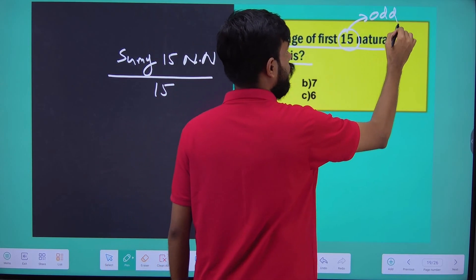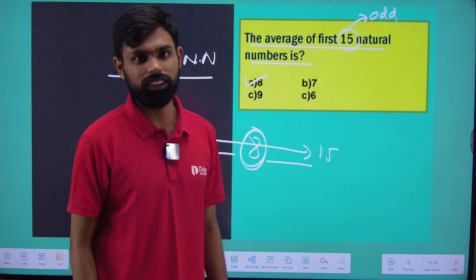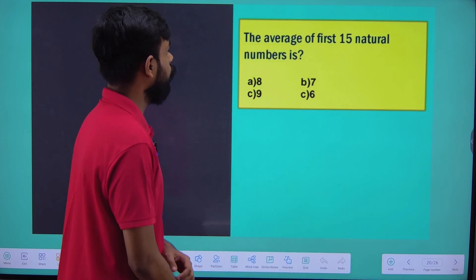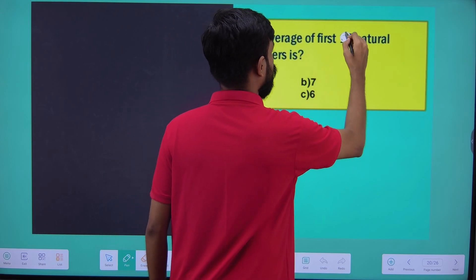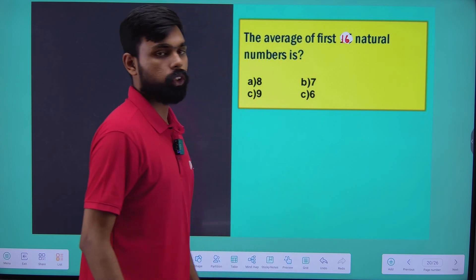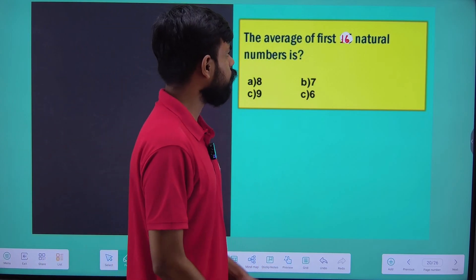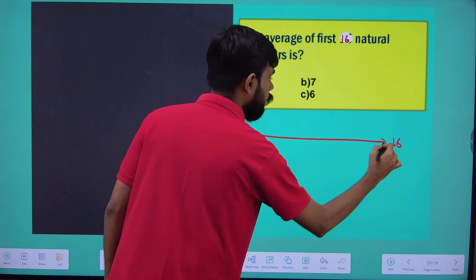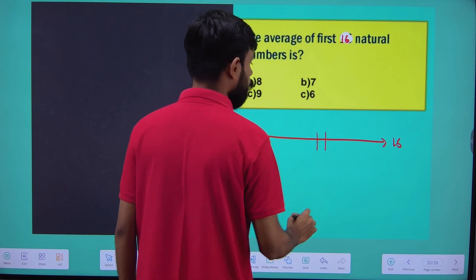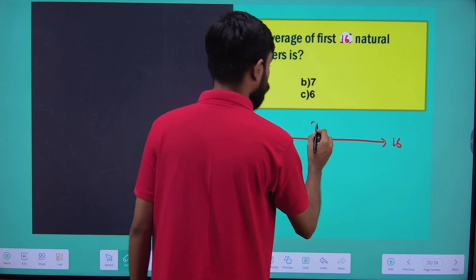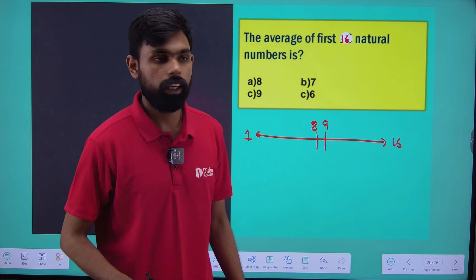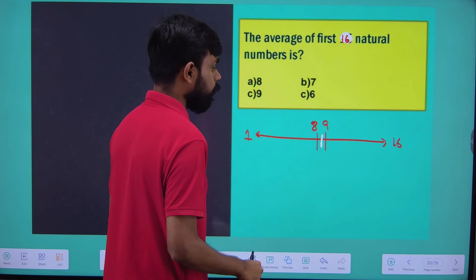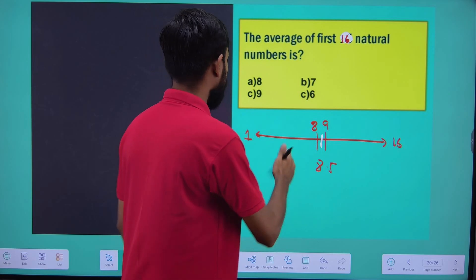That is the average of 1 number. We are going to get one of the values. The average of 16 natural numbers — you can choose two values: 8 and 9. The answer is 8.5.